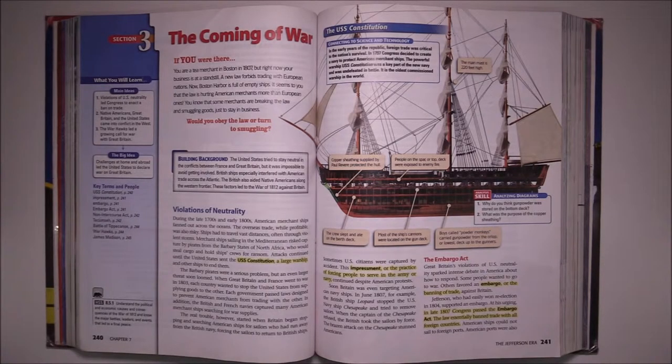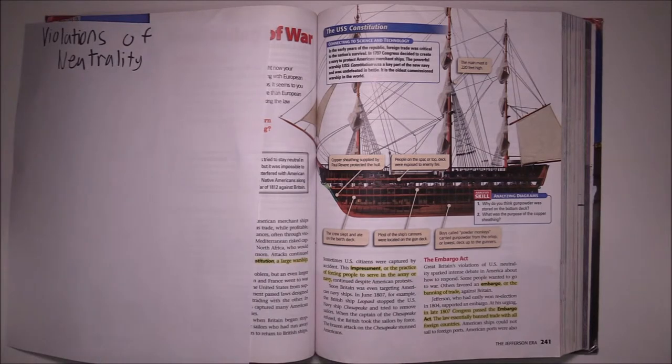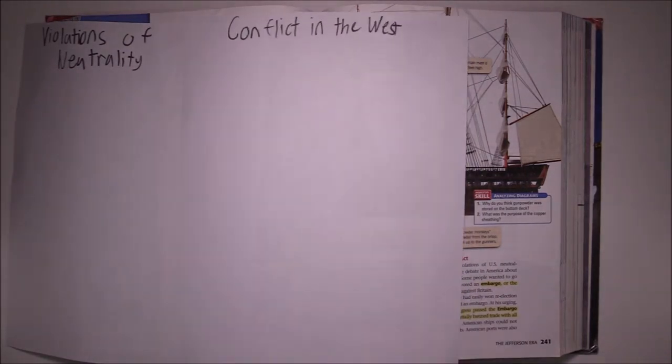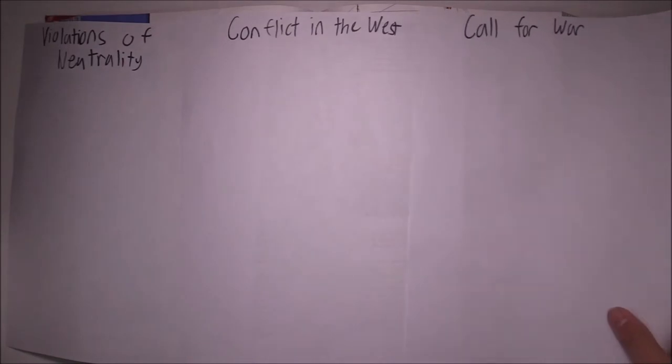Section 3 is made up of three parts: violations of neutrality, conflict in the West, and call for war. First, we will cover violations of neutrality.